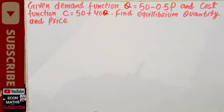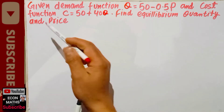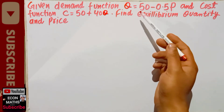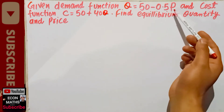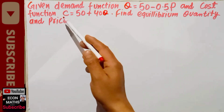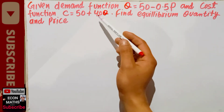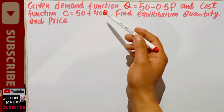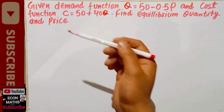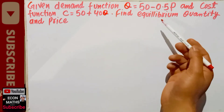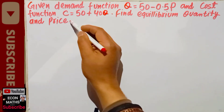Hi, this is Halal. In this video we will try to solve a question on finding the equilibrium quantity and price from the given demand function and cost function. The question is: given demand function Q = 50 minus 0.5P, where Q is the quantity and P is the price, and cost function C = 50 plus 40Q, where C is the total cost and Q is the quantity.